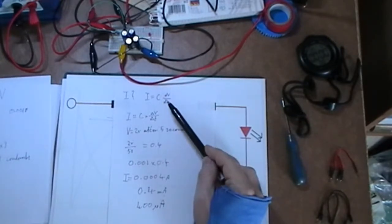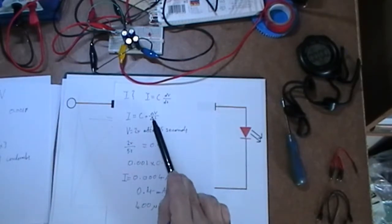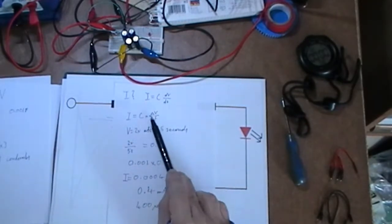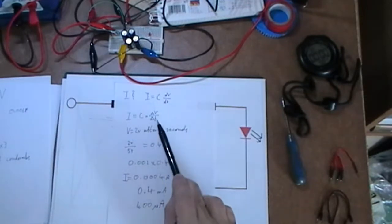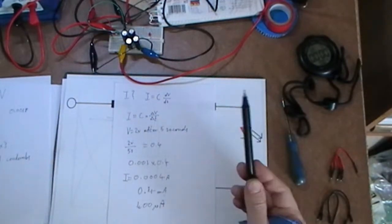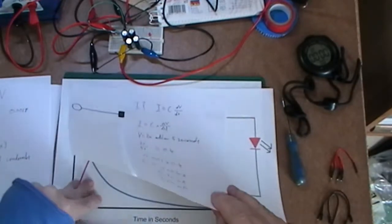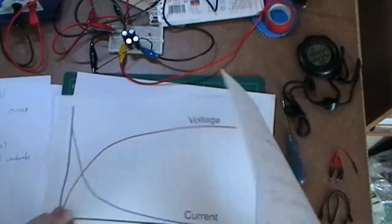And what's the delta? Well apparently the delta is the change. Sometimes written with a triangle. So it's the change in voltage divided by the change in time. Well what does that mean?